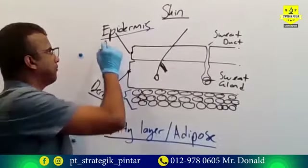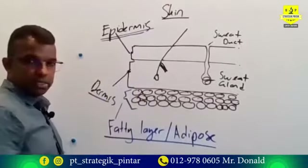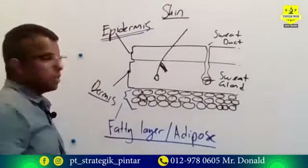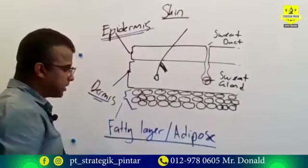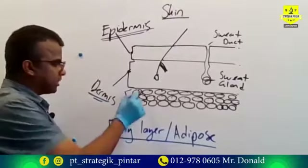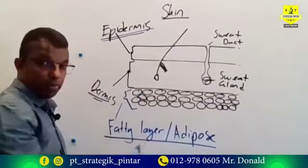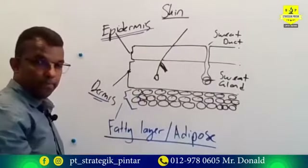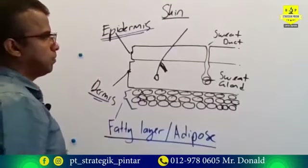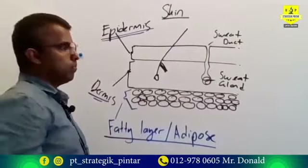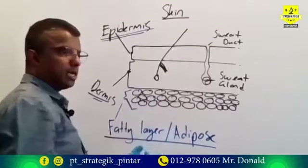The human or animal skin is divided into three basic layers: the first upper layer is the epidermis, the second layer is the dermis, and the third layer is the fatty layer, or we can call it the adipose layer.